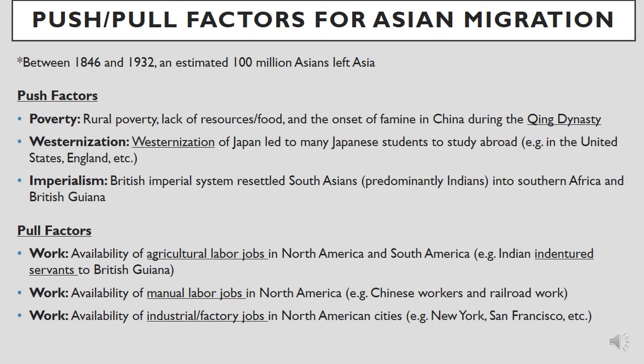Additionally, the British imperial system was a well-oiled machine of the mobilization of resources, goods, and people. The British imperial system settled millions of South Asians, predominantly Indians, into southern Africa and British Guyana in South America. Some pull factors included the availability of job opportunities — agricultural labor jobs in North America and South America lured Indian indentured servants to British Guyana; the availability of manual labor jobs lured Chinese workers to complete railroad work in the United States west of the Mississippi River; and availability of industrial and factory jobs in North American cities like New York and San Francisco brought Chinese and Japanese workers to both the Atlantic and Pacific coasts of North America. In New York's Ellis Island, thousands of Asian migrants entered the United States, and in San Francisco's Angel Island, more than 200,000 Chinese and Japanese migrants entered.